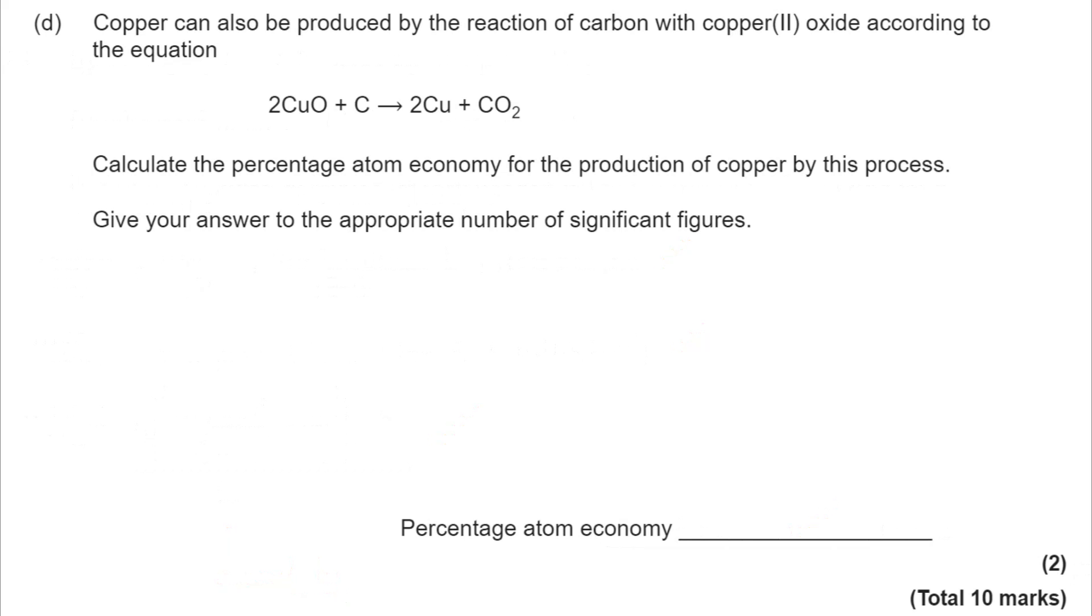Finally, part D, we have got here a very straightforward atom economy question. No tricks, nothing here to throw you. Our important product is the copper. So we have two of those. So it's 2 times 63.5. My total MR of 2Cu and C is 171. So that's what I divide by, multiply by 100, and we get to 74.3%. And it is the appropriate number of significant figures, because the periodic table provides relative atomic masses to three significant figures. So that's the level that we'll take our answer to as well.